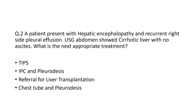Coming to the second question: a patient presenting with hepatic encephalopathy, recurrent right-side pleural effusion, USG abdomen showing cirrhotic liver and no ascites. What is the next appropriate treatment? Options include TIPS (transjugular intrahepatic portosystemic shunt), IPC (indwelling pleural catheter) and pleurodesis, referral for liver transplantation, and chest tube and pleurodesis.